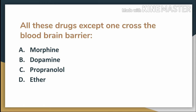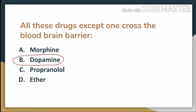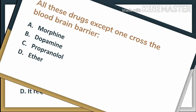The answer to the question is dopamine. As we know from the previous video on anti-Parkinson drugs, we take levodopa for the treatment of Parkinson's disease because it is the precursor of dopamine and is able to cross the blood-brain barrier, but dopamine itself cannot cross the blood-brain barrier. So the answer here is dopamine.